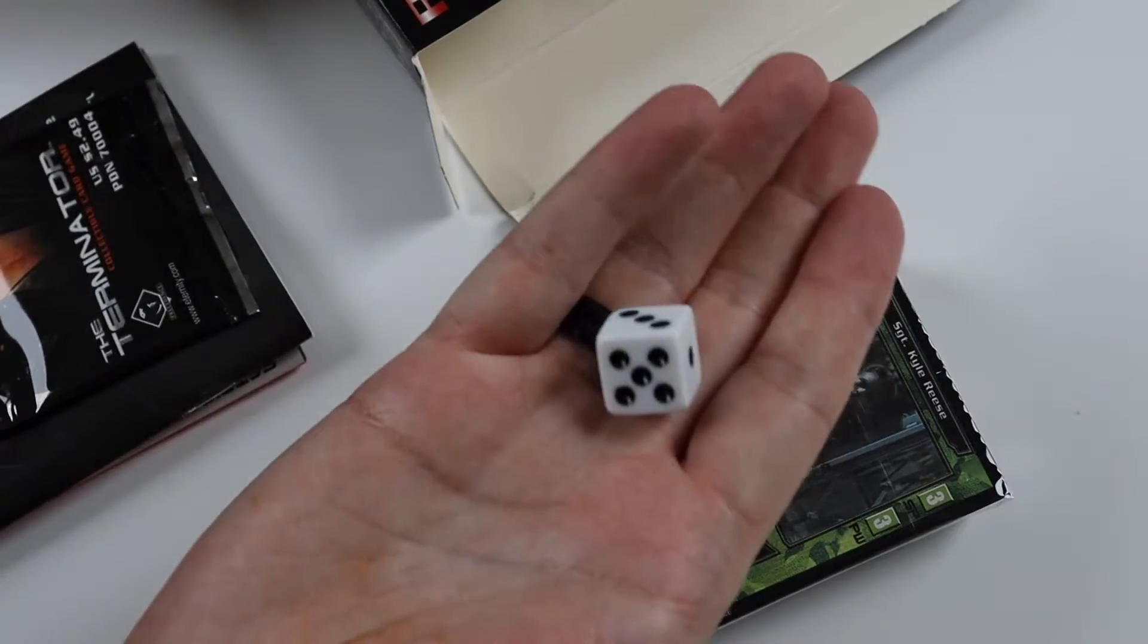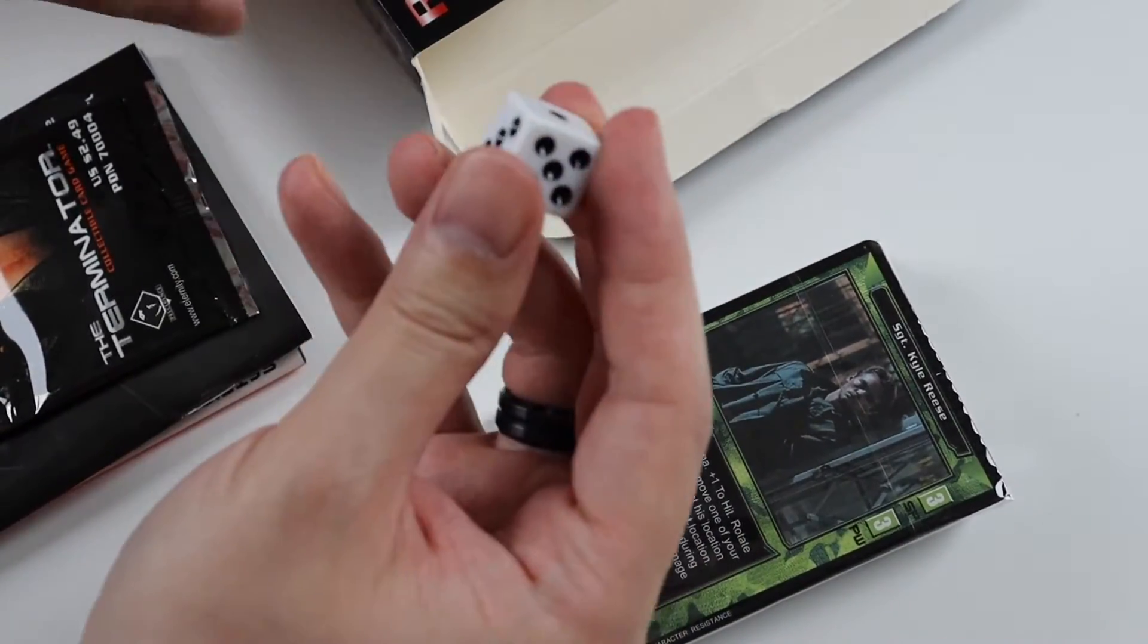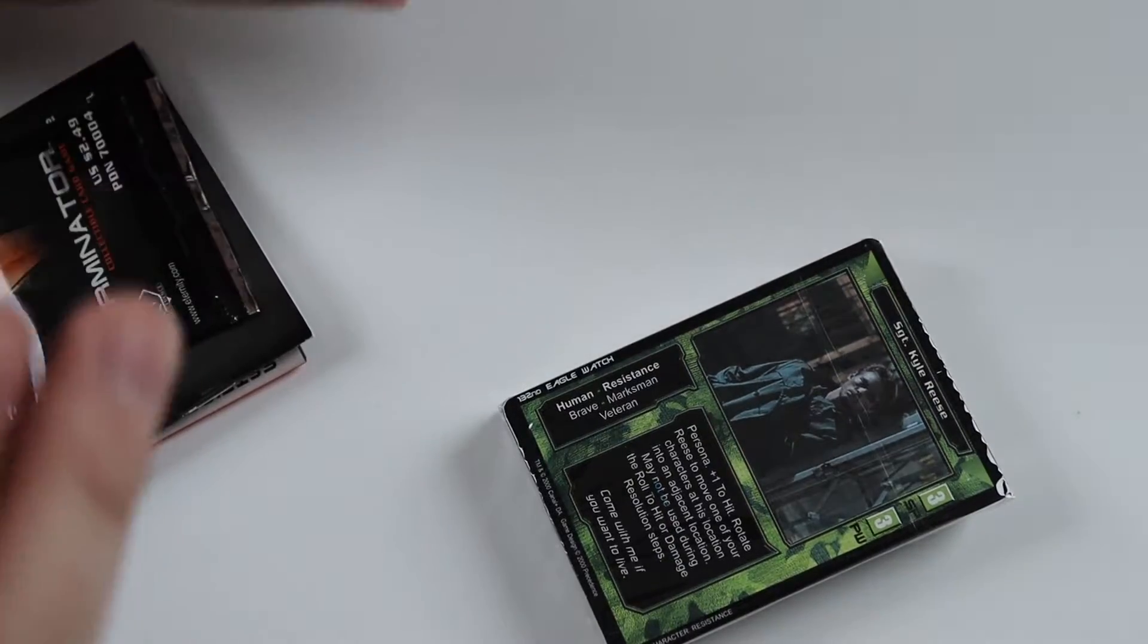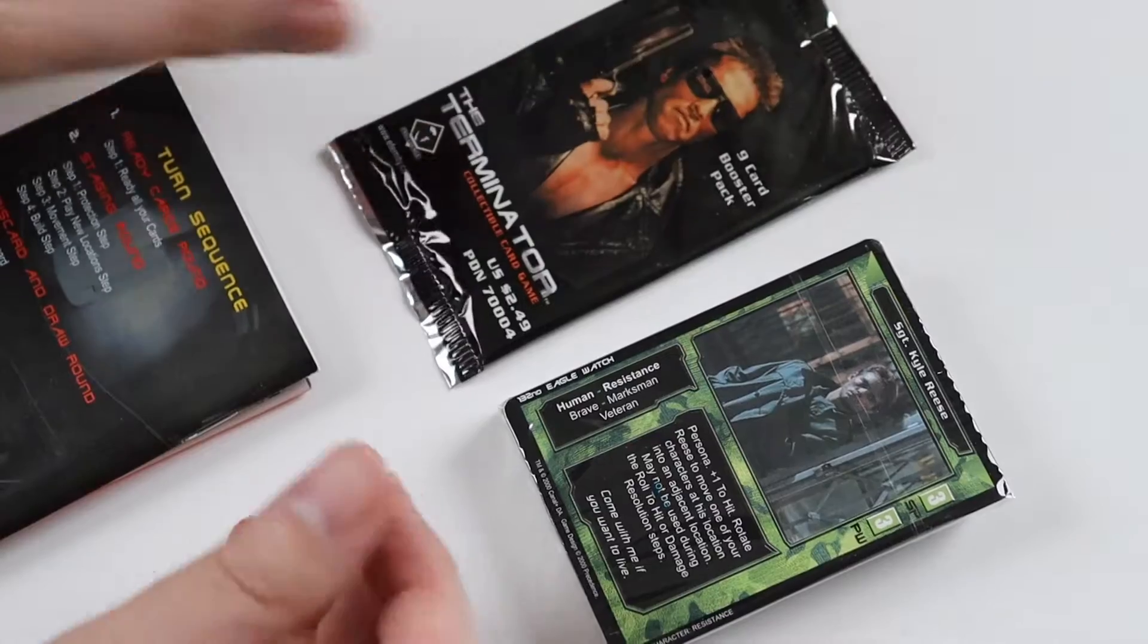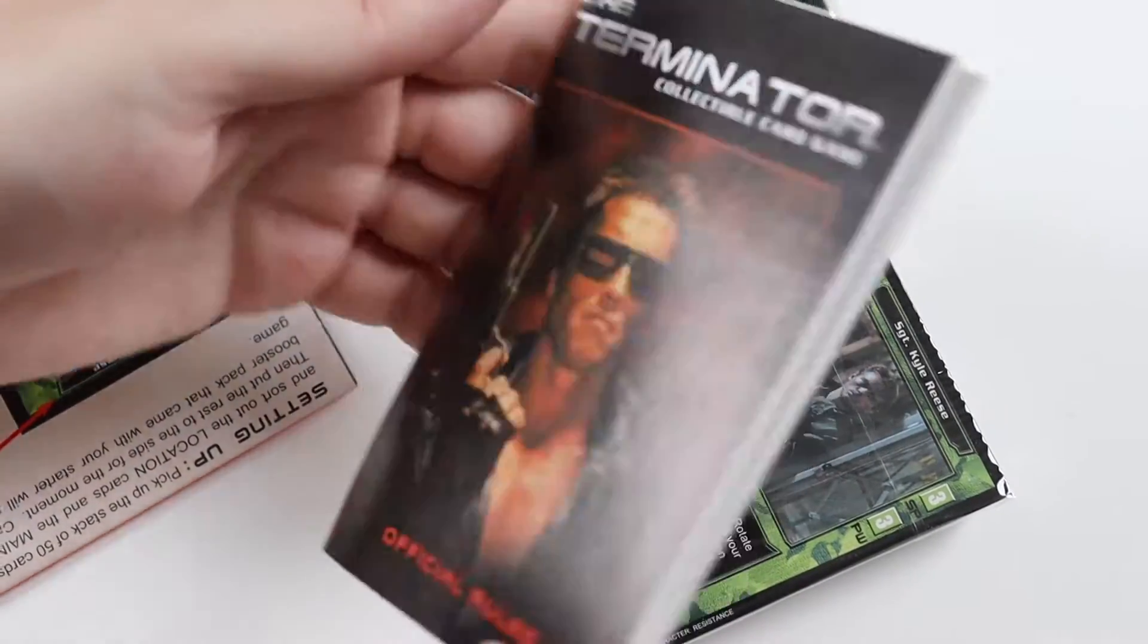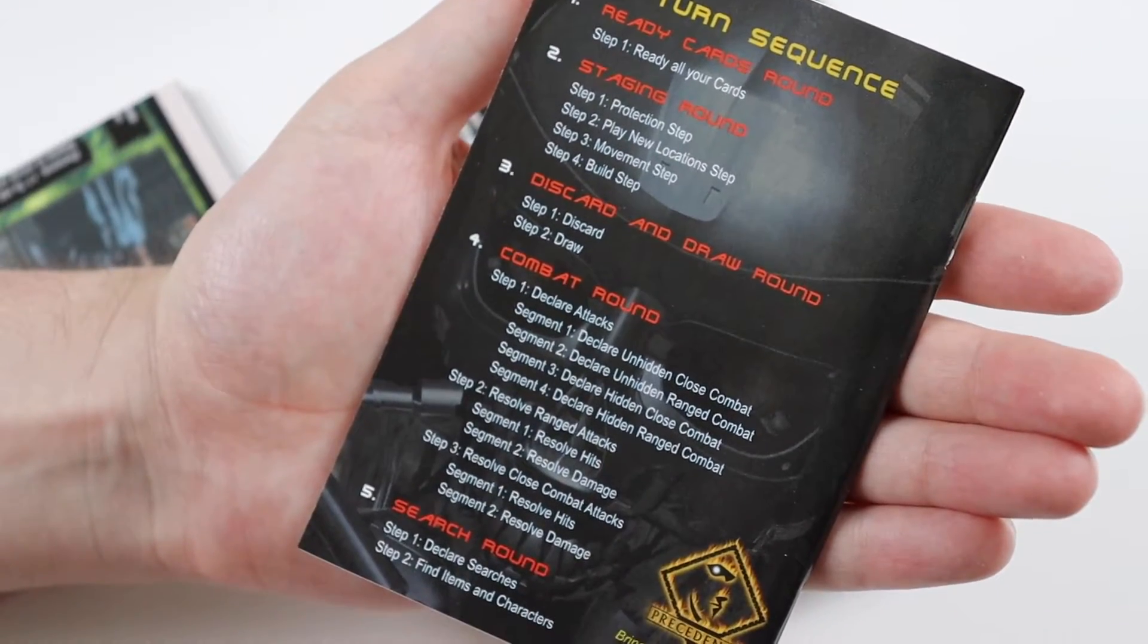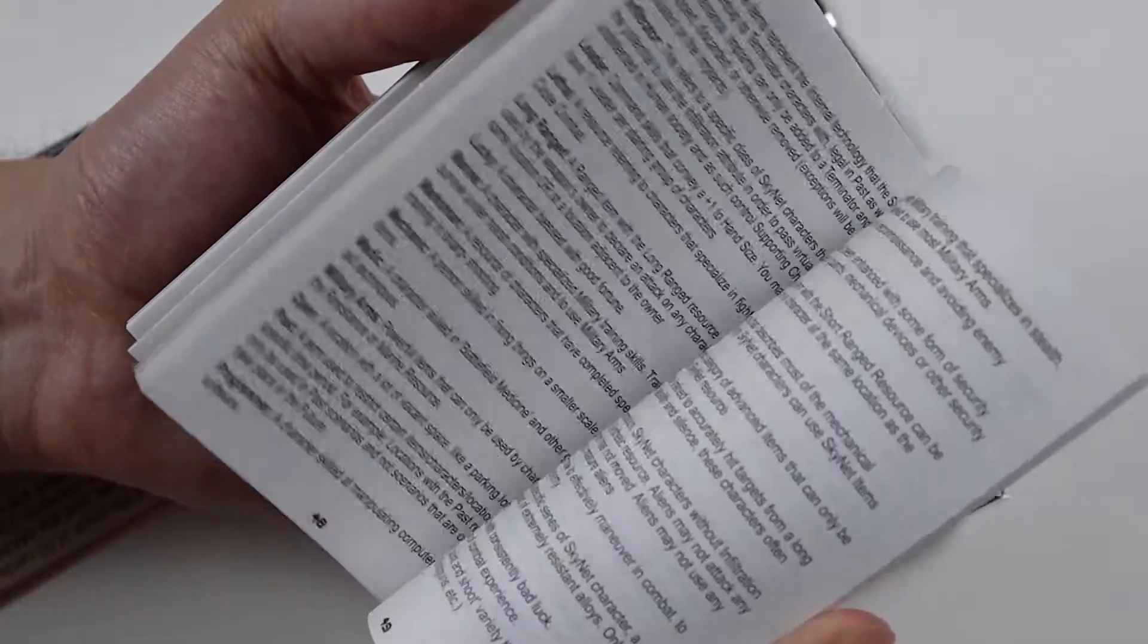And you get a lot of goodies inside. So you get a six sided dice similar to the Aliens Predator card game. You get the booster pack which will open in a minute. You get the rules book which has the turn sequence on the back there which is handy. Again the same size as the Babylon 5 one.